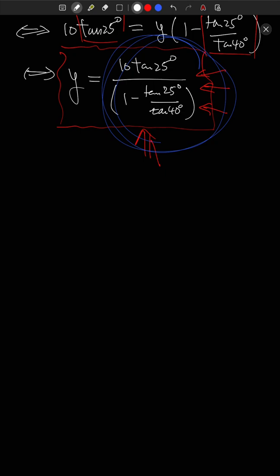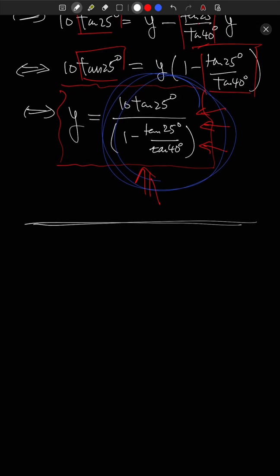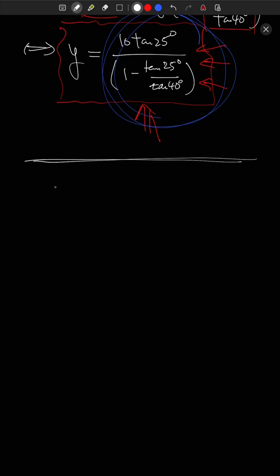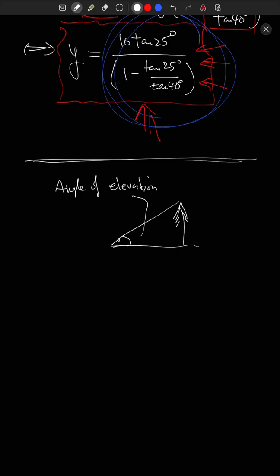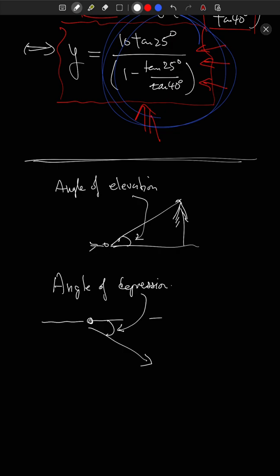A couple of terminology notes: the angle of elevation is the angle formed when you look upward from horizontal toward an object, like looking up at a tree. The angle of depression is when you're looking from a horizontal height downward at something — that downward angle is the angle of depression. You'll see this term on the online homework; just remember it's the angle when looking from above down to something.